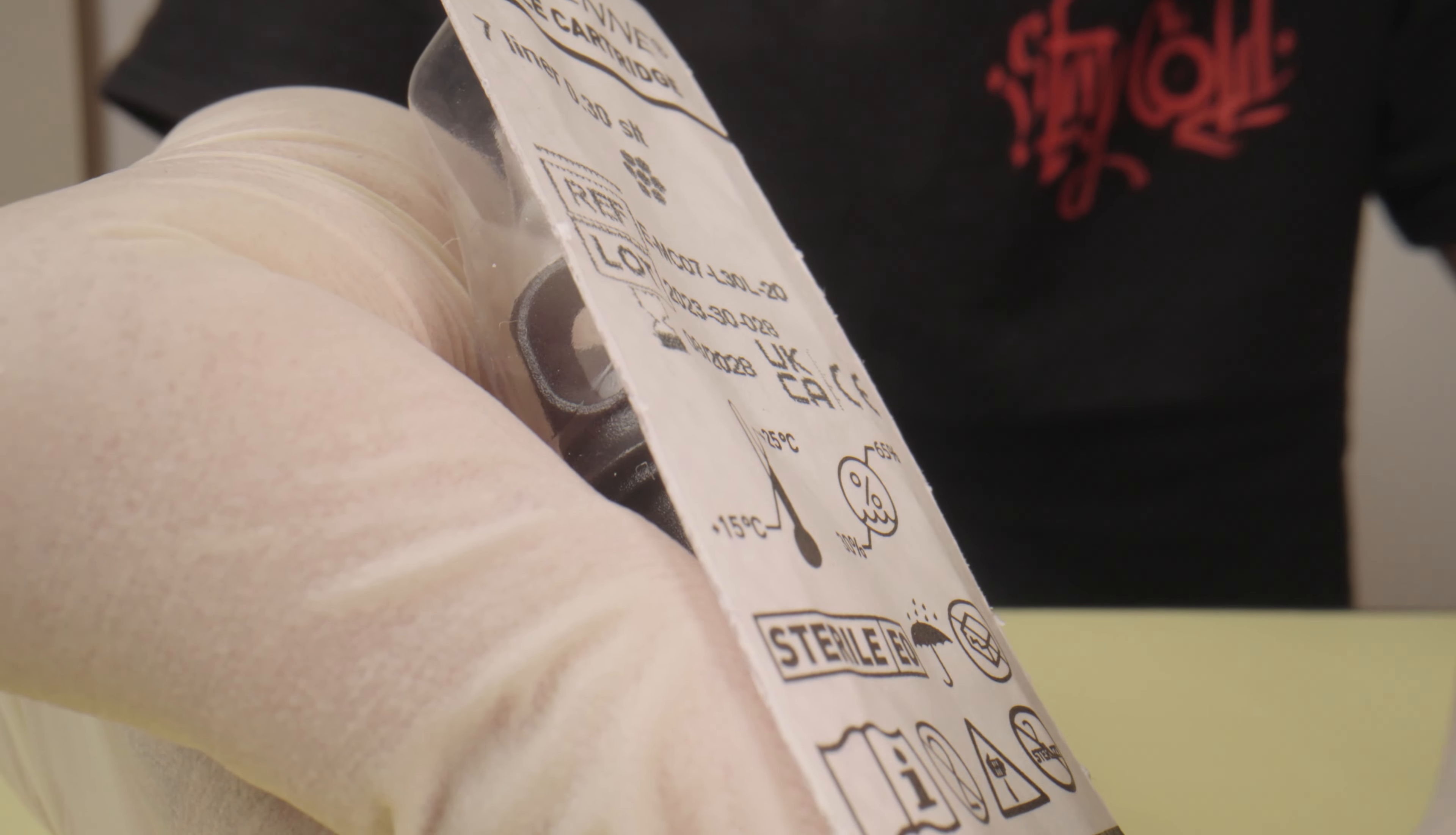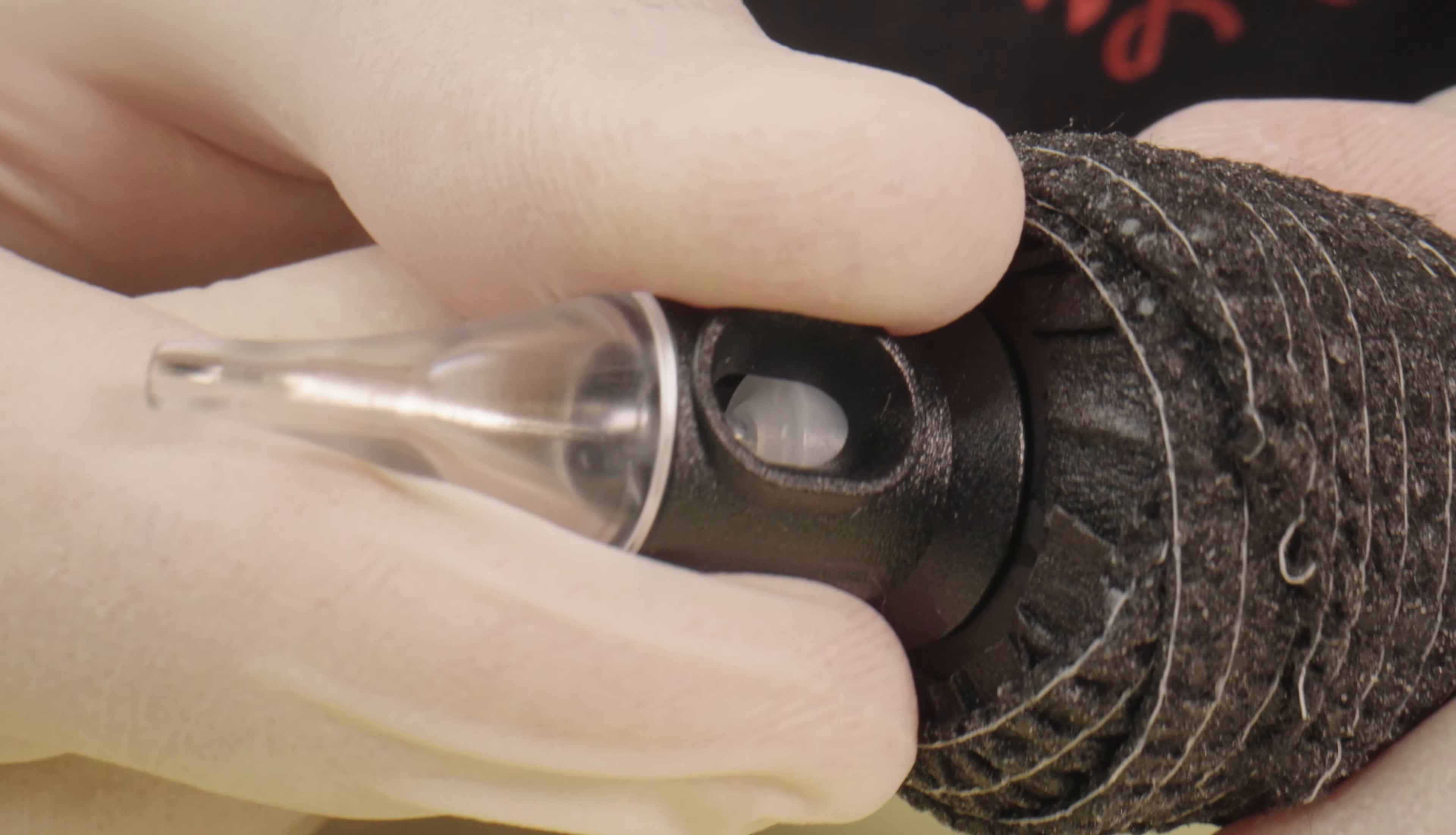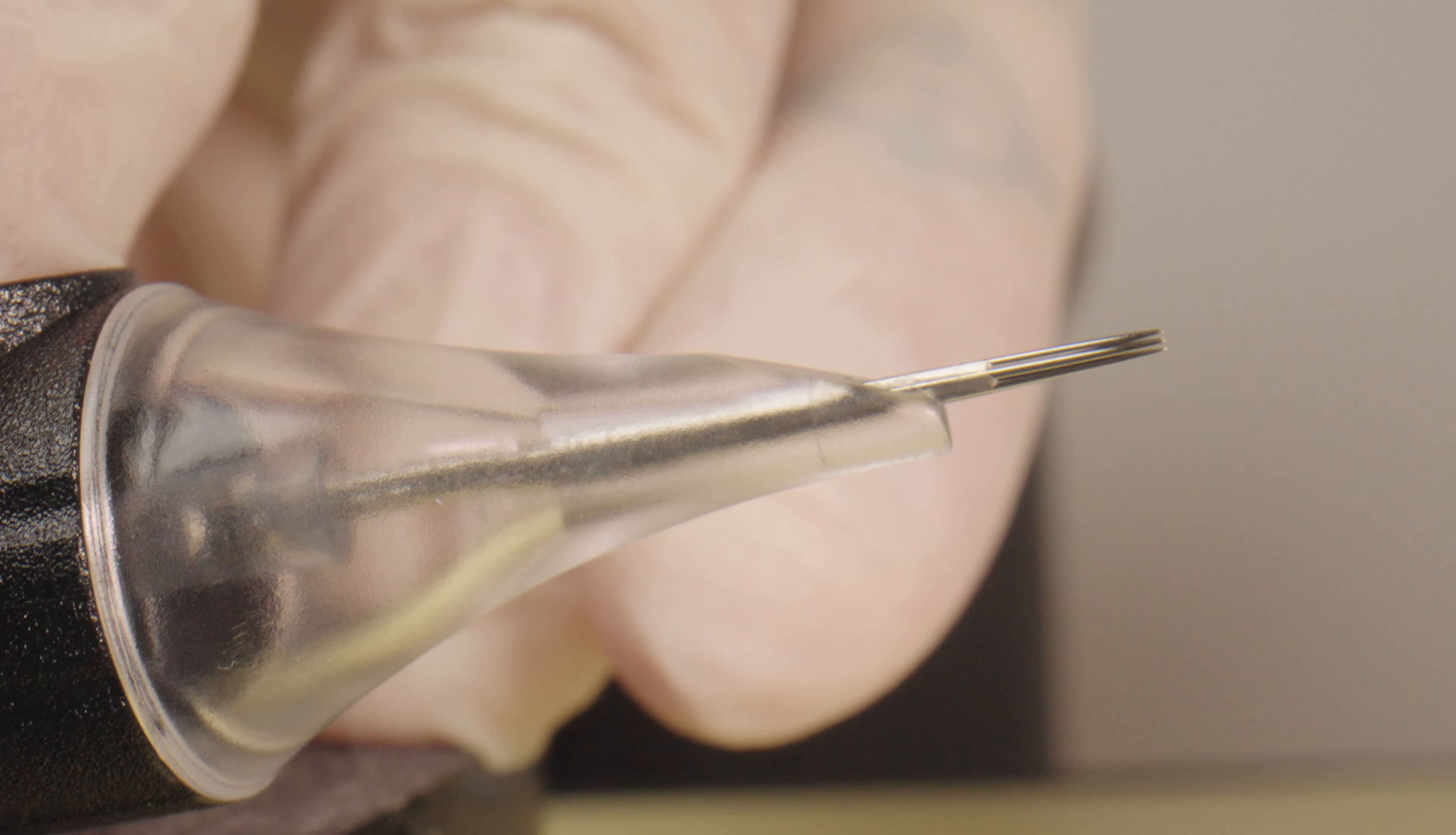Once everything's ready we can get started. For this tattoo I'm using a seven round liner with a 0.3 millimeter needle. You can use thinner needles but that will extend the working time. The needle protrudes about four millimeter from the needle module allowing for precise work.